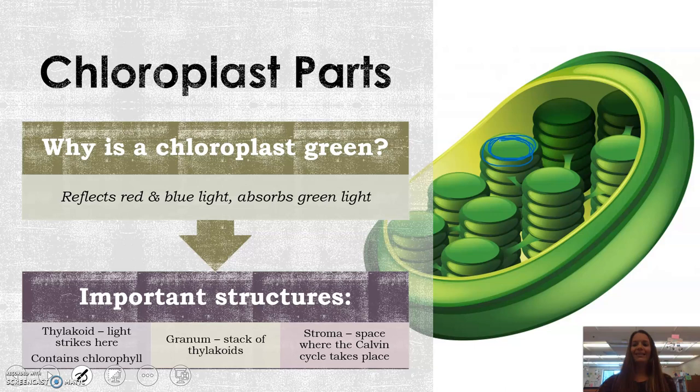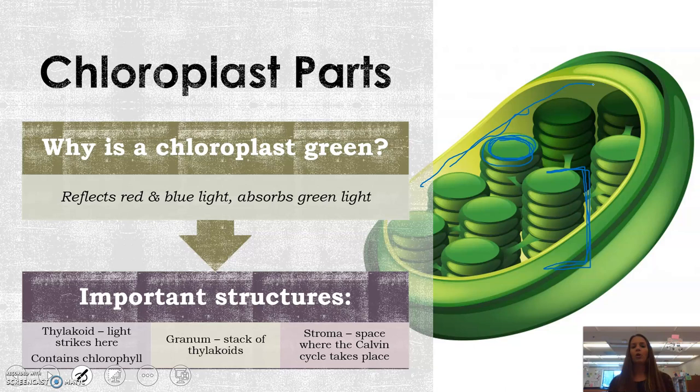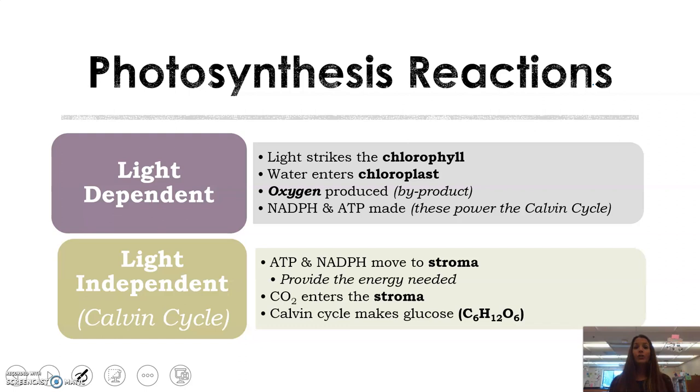A granum, on the other hand, is a stack — an entire stack of thylakoids. And then lastly, stroma. This is the space in between; it just looks like air in this picture. But this is where the Calvin cycle takes place, which is a really important process of photosynthesis.